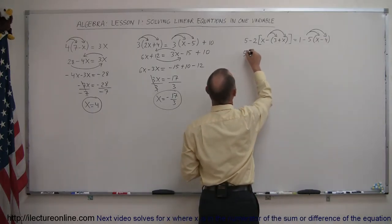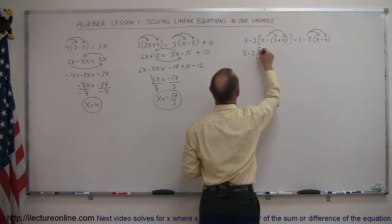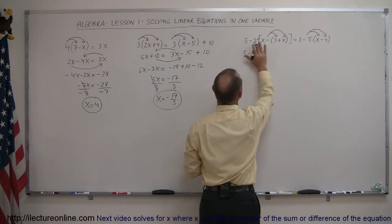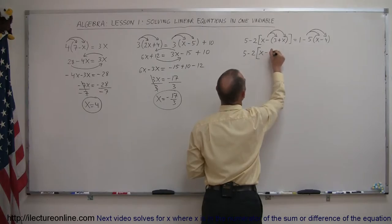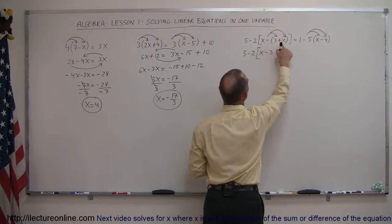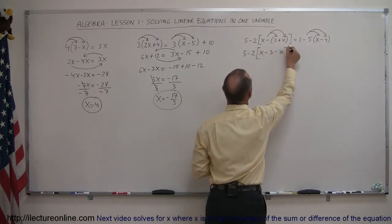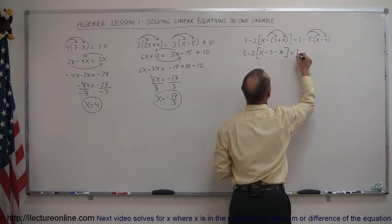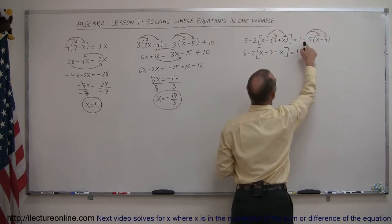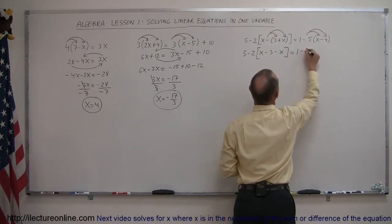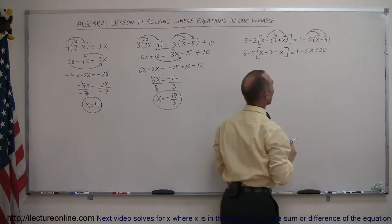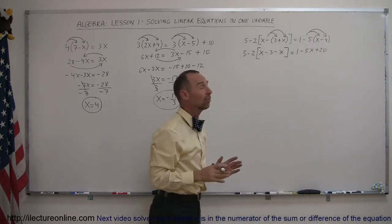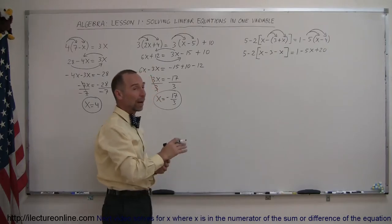So we have 5 minus 2 times x — leaving everything else the same — then we distribute the minus on the 3, which becomes minus 3, and the minus on the x, which becomes minus x, equals 1. Then we distribute the minus 5 on the x, which becomes minus 5x, and the minus 5 on the minus 4, which becomes plus 20. So we've gotten rid of all the parentheses — the next step is to get rid of the brackets.